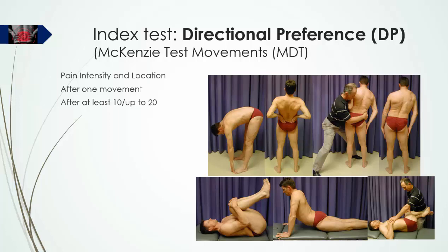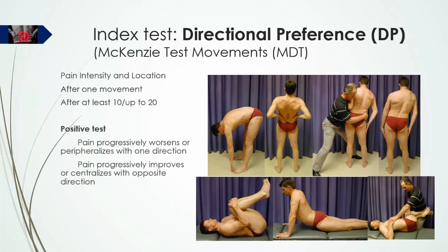Pain intensity was measured after single test movements and after each set of 10. In most cases, the maximum number of movements carried out for each test movement was 20 repetitions. A positive test for directional preference was recorded when pain progressively worsened or became more peripheralized with movements in one direction, and progressively reduced or centralized with the opposite movement. It was not enough to observe improvement with one direction — the worsening and improving effects of opposite mechanical loading patterns had to coexist.